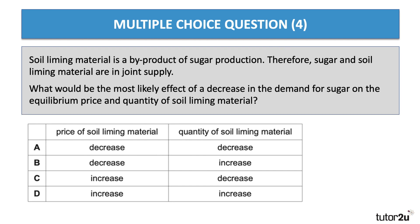We have one last question to do with joint supply. Soil liming material is a byproduct of sugar production; therefore sugar and soil liming material are in joint supply. What would be the most likely effect of a decrease in the demand for sugar on the equilibrium price and quantity of soil liming material? Press the pause button and have a go.